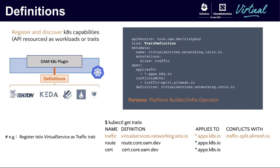Definitions are very interesting. For a platform it's important to figure out which Kubernetes API or CRD is the capability you want to expose to your users. This means other APIs and CRDs are system-level and should not be leaked to users. That's why we register CRDs or Kubernetes API resources as workloads or traits and expose them to users as the user-facing API for the platform. Everything is extensible — if users need a new workload or trait, you simply install the Kubernetes CRD and controller and register it as a new capability. For example, we can register an Istio VirtualService as the traffic management trait and also declare that it conflicts with another service mesh.